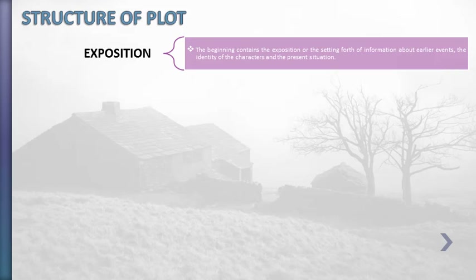The murderer then will flee from the witness. So here we have information about earlier events and information about the present situation, which is the crime scene, letting us know that the story will be about investigating the identity of the murderer. We also have the identities of the main characters: the murderer, the witness, and the victim.